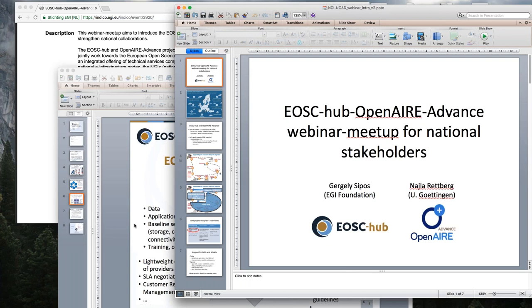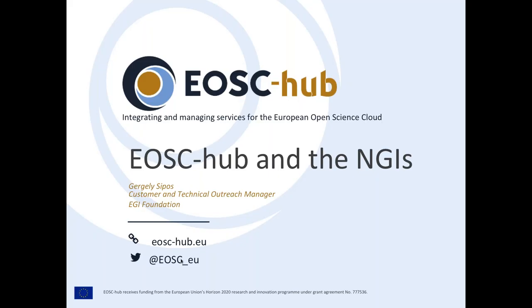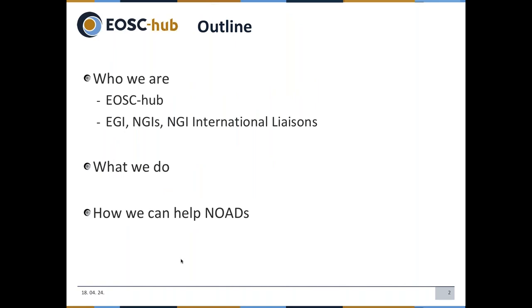Let me switch to the introduction of EOSCHub and the NGIs. I will start with a fact sheet and objectives, then go into the national focus points — the EGI NGIs and NGI international liaisons — explaining what those concepts mean. These are key enablers and partners in the project. We will describe what we do together to make EOSC happen, and I will close with information on how we see working together with the NOADs.